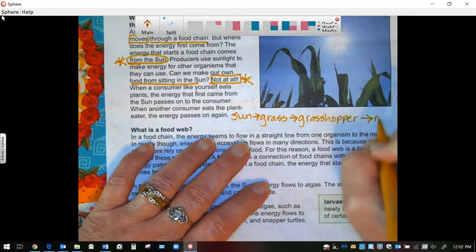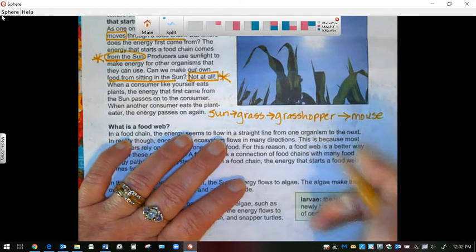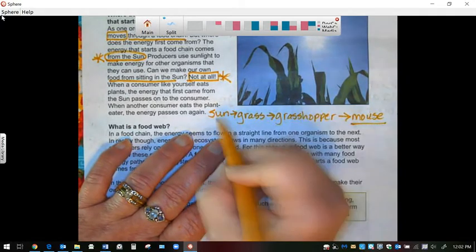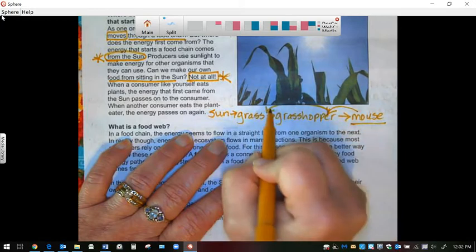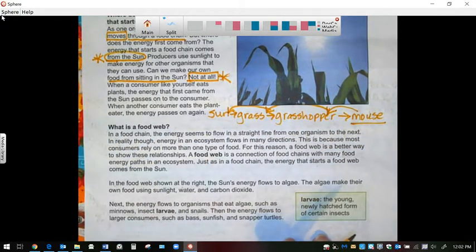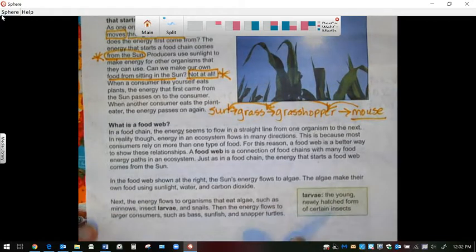And then say that a mouse ate the grasshopper, then the mouse is actually getting the energy of the grasshopper, the energy of the grass, and the energy of the sun. So the mouse is getting all of those energies.